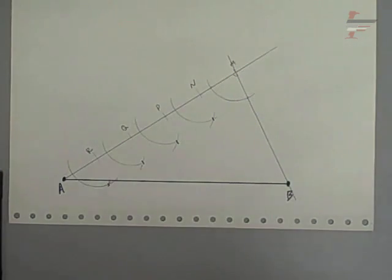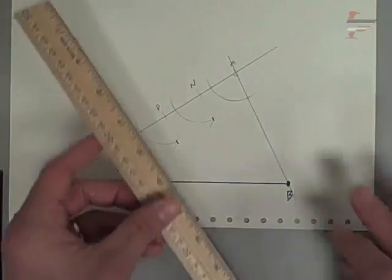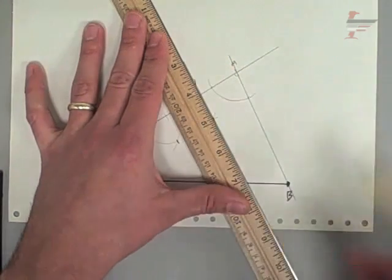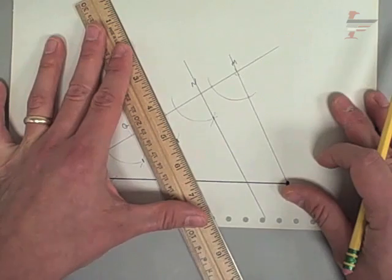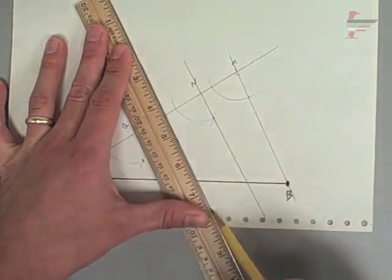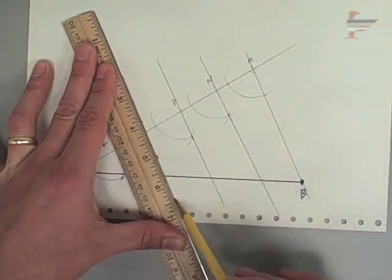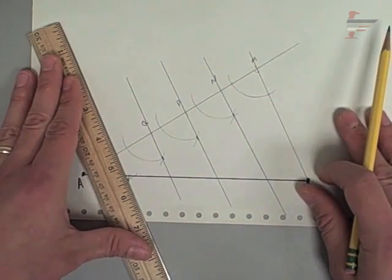Now each of those I'm going to connect to make the line. So point N to that intersection. P and its intersection. Q and its intersection. And then R with its intersection.